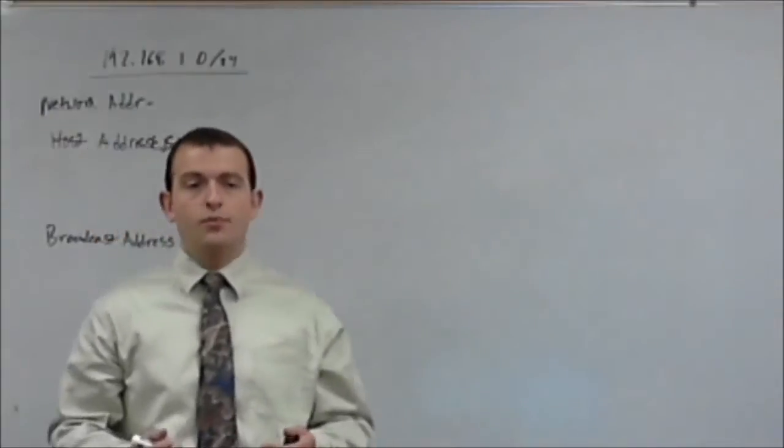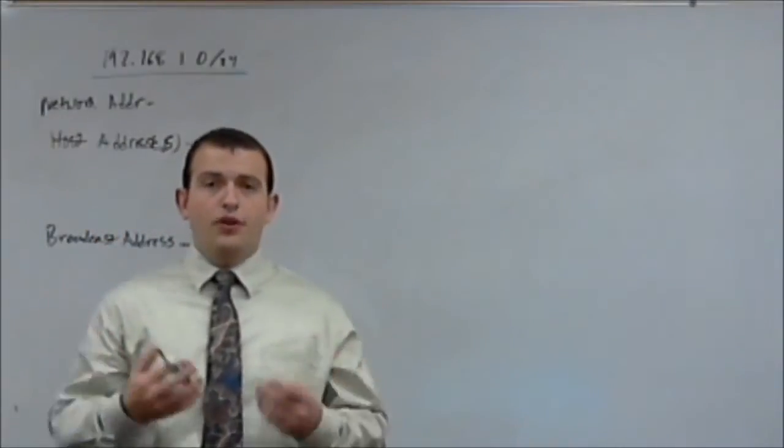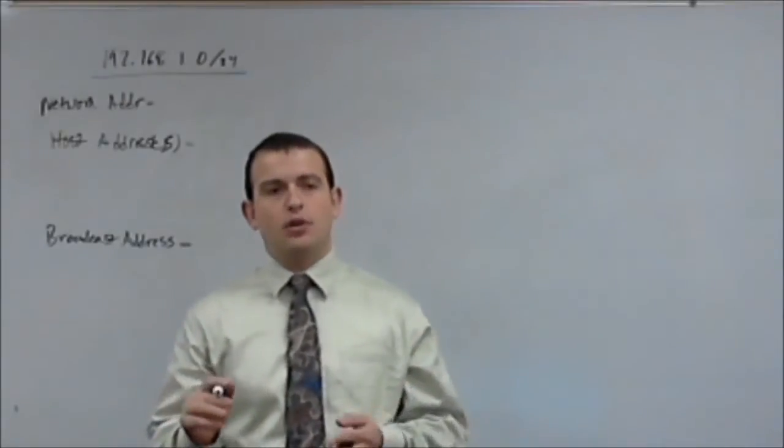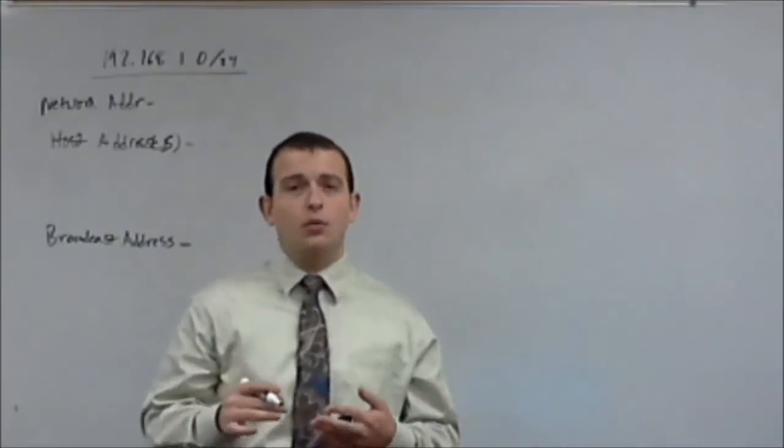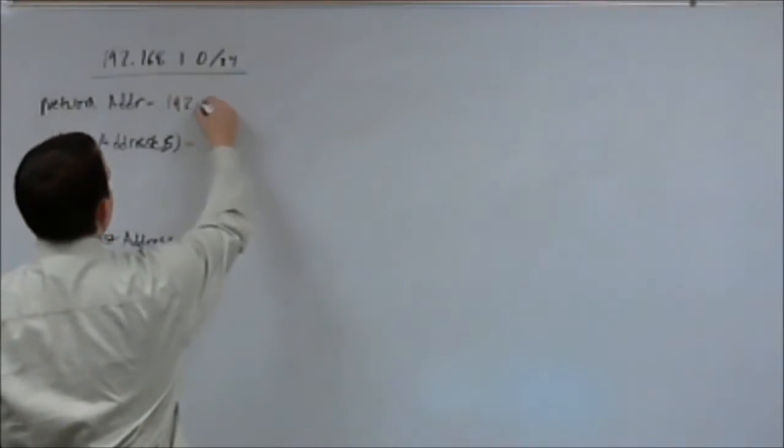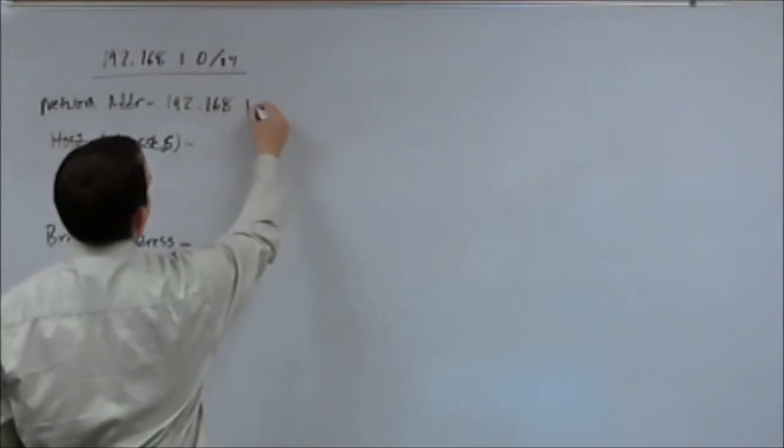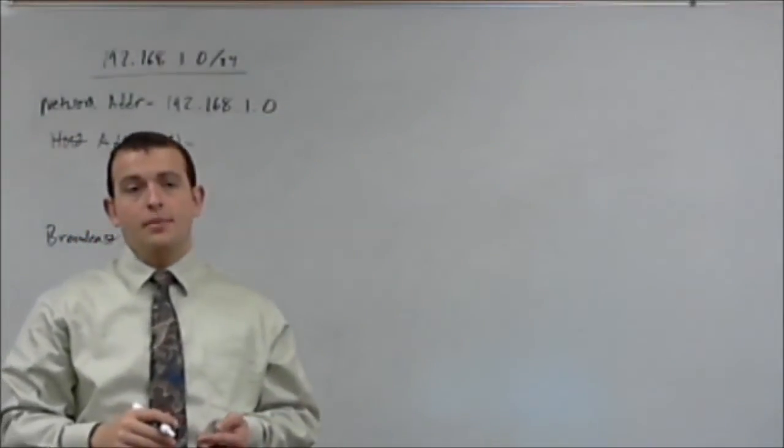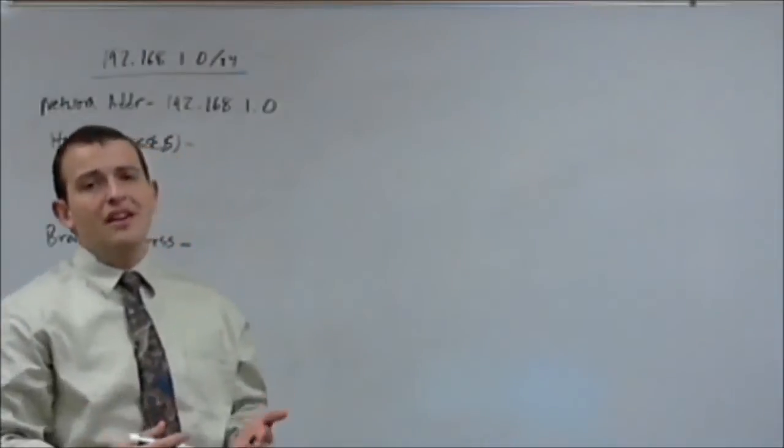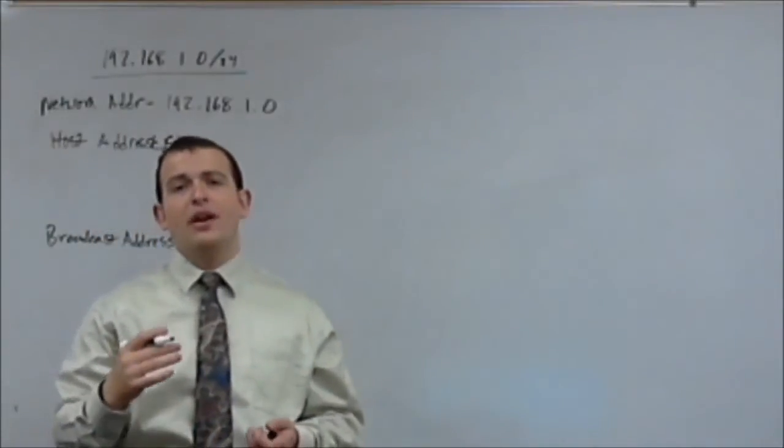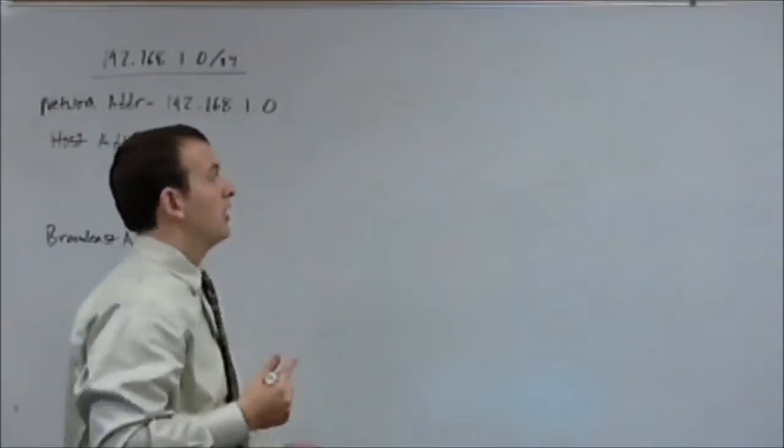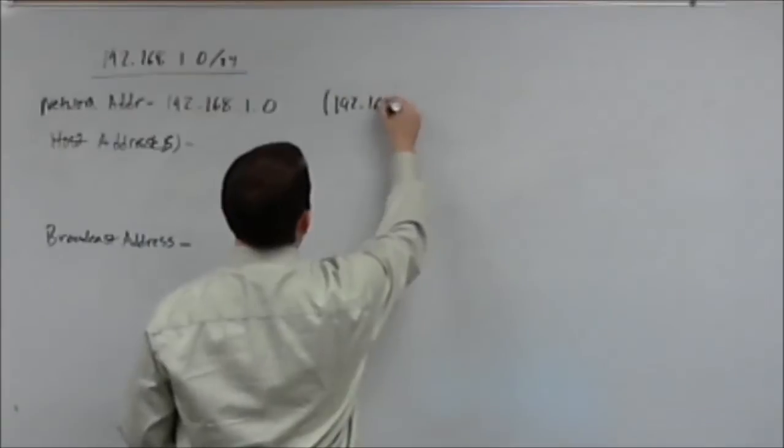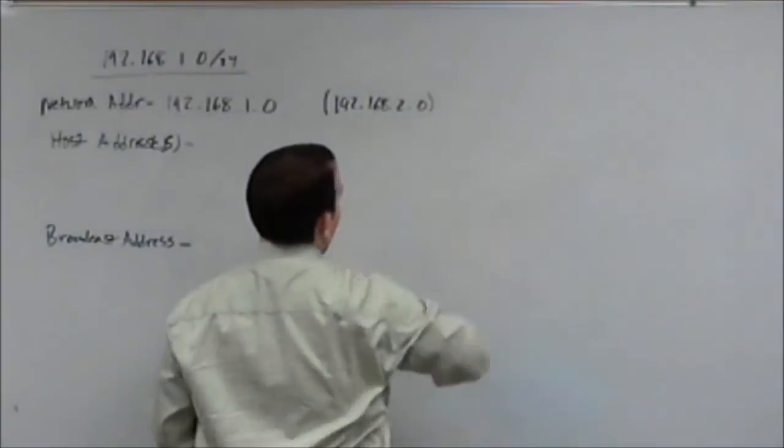Alright, so first we're going to look at the network address of this network. The network address of this network is going to be 192.168.1.0. It is the identifier for this network. And because we're using slash 24 that means that every 256 values there will be a new network. So a new network again would start on 192.168.2.0 and so on and so forth.